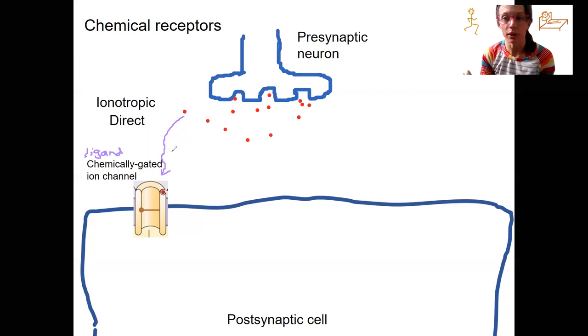This could be sodium, potassium, chloride, calcium. You've seen all these in different places, depending on what kind of protein it is and where it's located on the cell. So this is a fast response. It's a direct response, so the neurotransmitter is going to cause an effect in the postsynaptic cell that is quick.